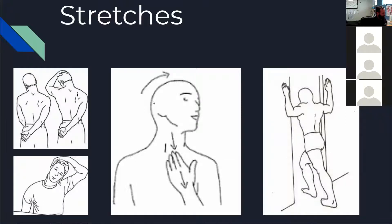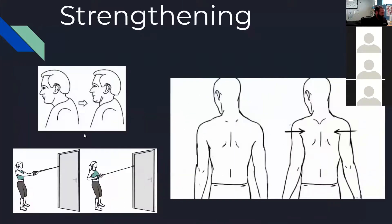We also have the doorway stretch — keeping those pectoral muscles stretched so the shoulders can reach back to a more optimal position. Along with that: chin tucks — we want to see the double chin, if you don't have the double chin you're not doing it right. Then band pulls to strengthen the muscles between the shoulder blades, scapular squeezes bringing them together and down — I cue it as trying to put your shoulder blades in your back pocket.